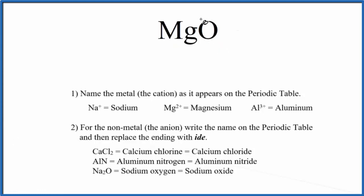And specifically, this is a binary ionic compound. That's because we have Mg and O, just two different elements bonded together. Because we have a binary ionic compound, we'll use these rules to write the name.